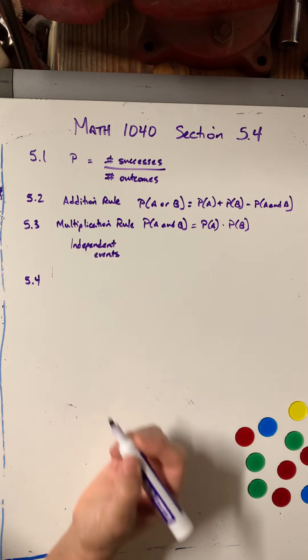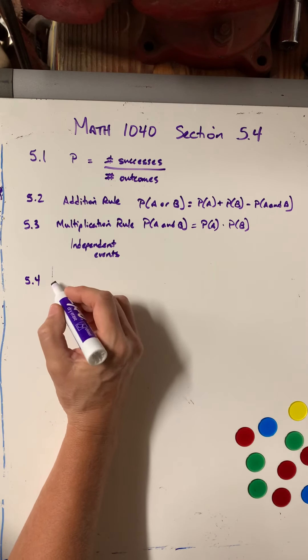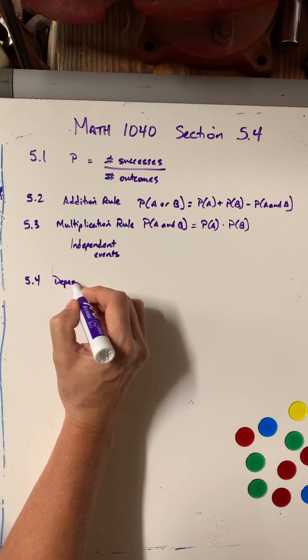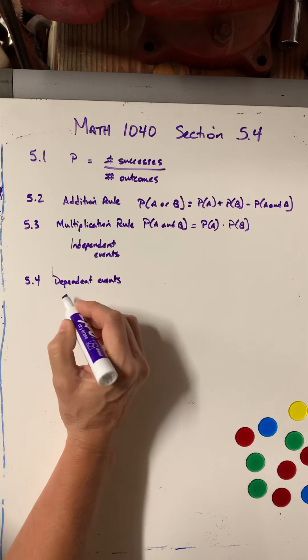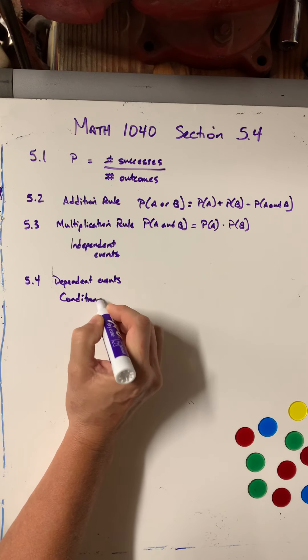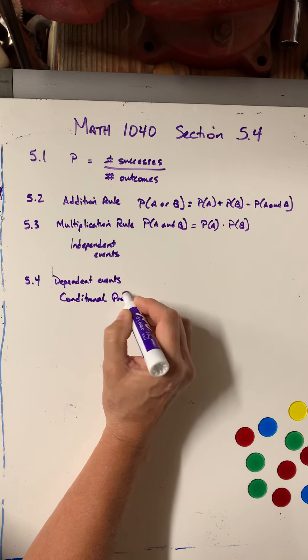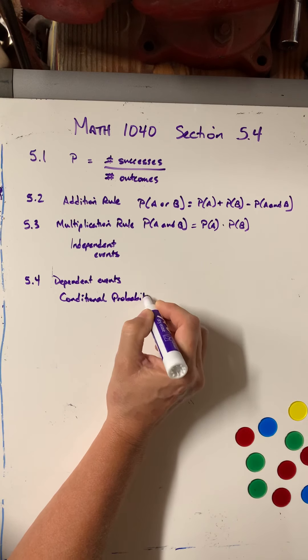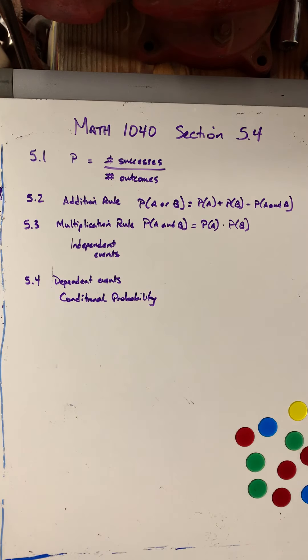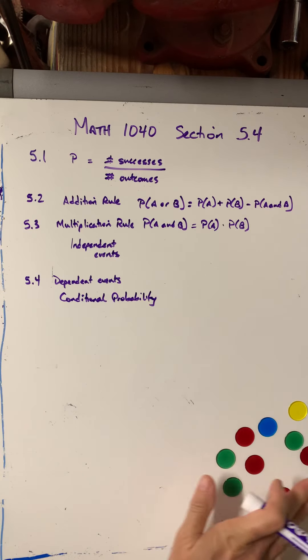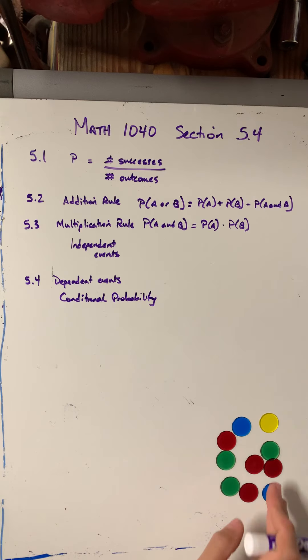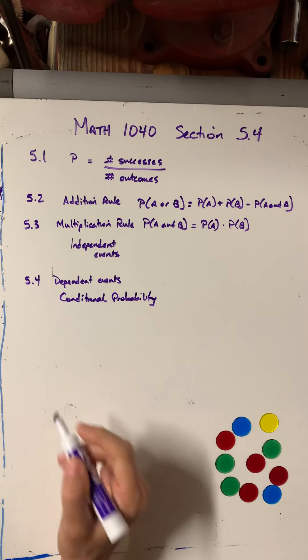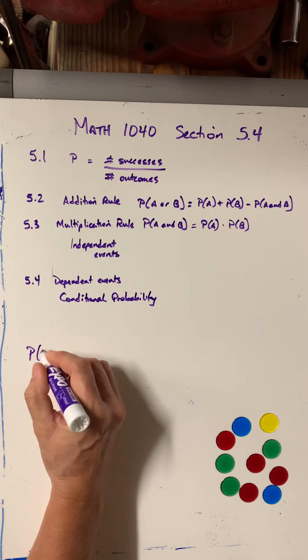So now we're in 5.4 and we're dealing with dependent events, which is what we also call conditional probability. So let's look at an example real quick for conditional probability. So let's say I was looking at these chips and I wanted to know, let's do something simple. What's the probability of getting a red chip?